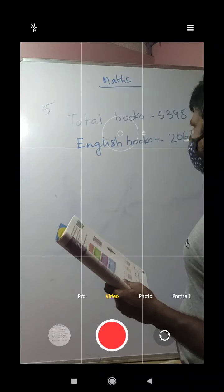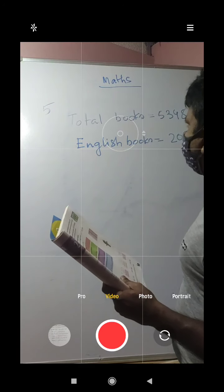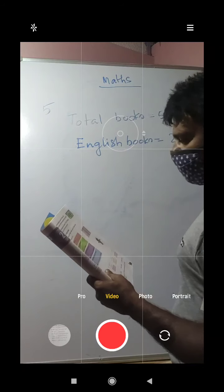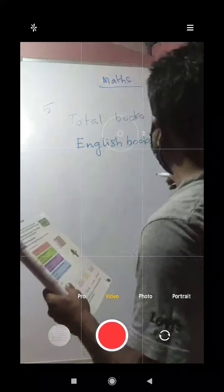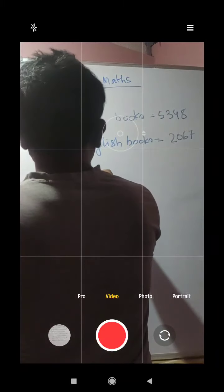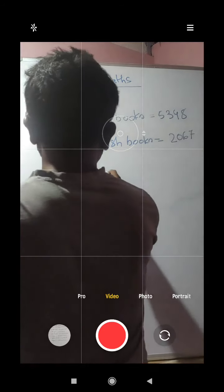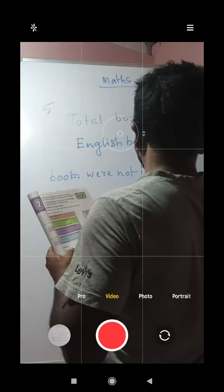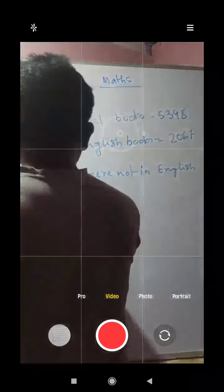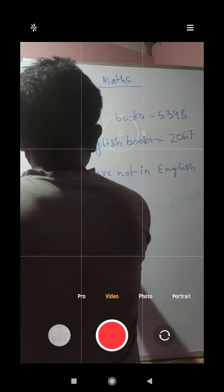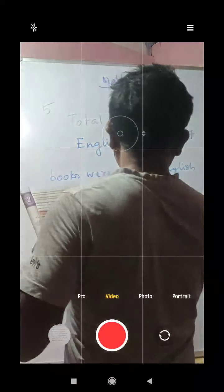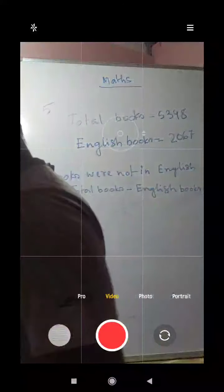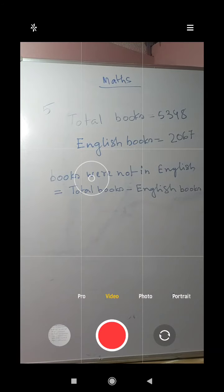We already know the English books figure. If we subtract the English books from the total books, the figure we get will be the books not in English. So the equation is: books not in English equals total books minus English books.